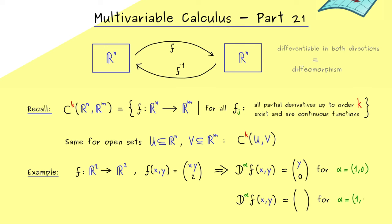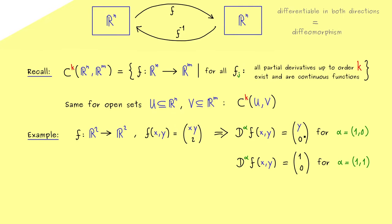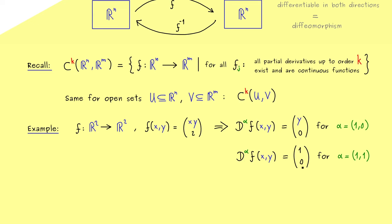Ok, and then in the same way, we could consider the multi-index α is equal to (1,1). So first the partial derivative with respect to x and then with respect to y. And at this point we already see, no matter which multi-index we use, we always get out continuous functions in the components.